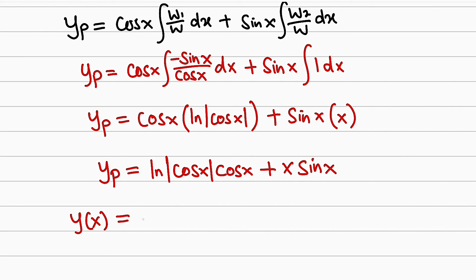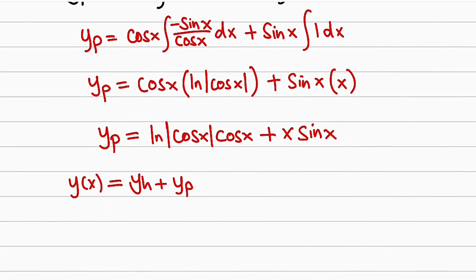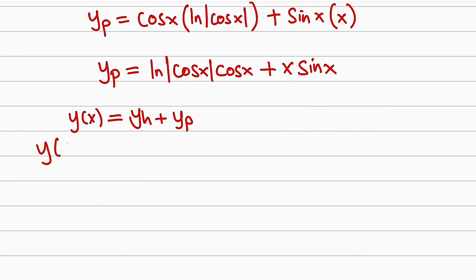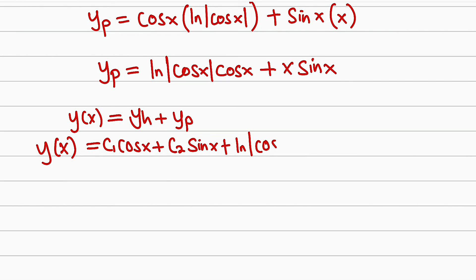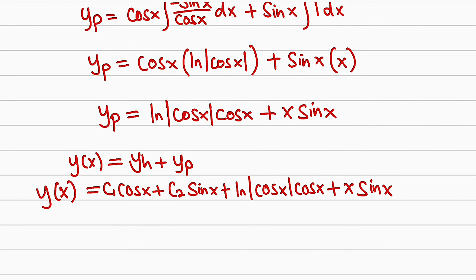Remember the general solution is y(x) = y_h + y_p. So the full general solution is: y(x) = C1·cos(x) + C2·sin(x) + cos(x)·ln|cos(x)| + x·sin(x). This is the general solution for that differential equation.